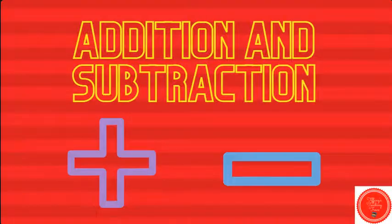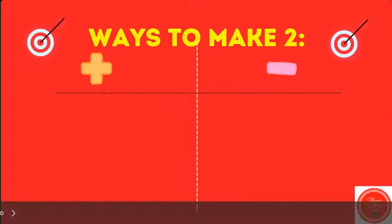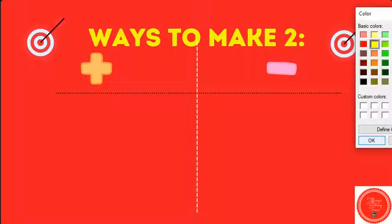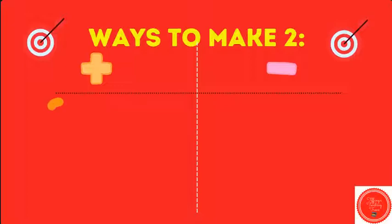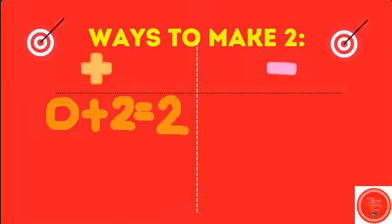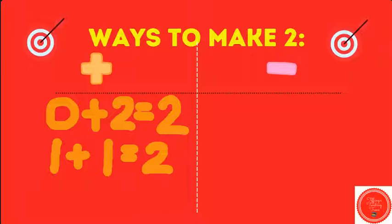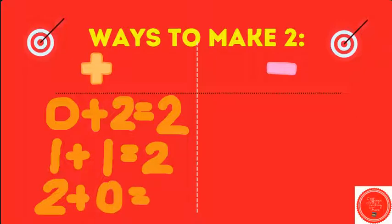Let's work on some addition and subtraction. How many ways can we make the number two? What do I need to add to zero to get to two? I have to add one more. One plus one equals two. What about two? If I have the number two, what do I have to add to get to two? I don't have to add anything. Two plus zero equals two.